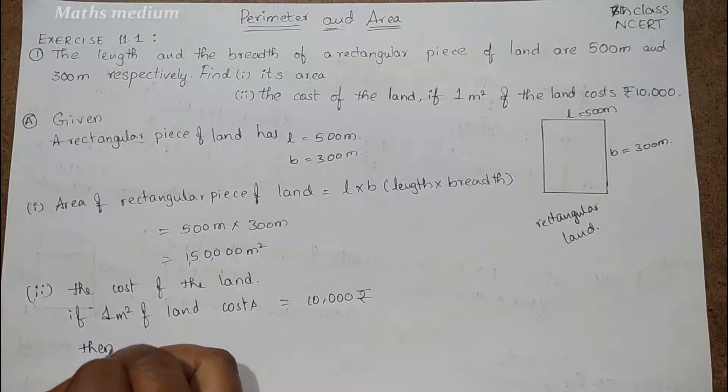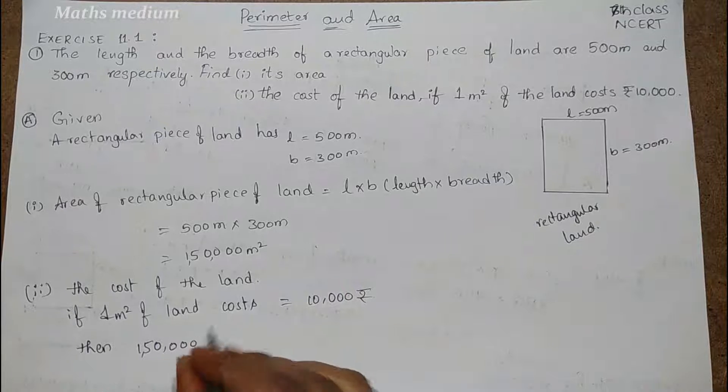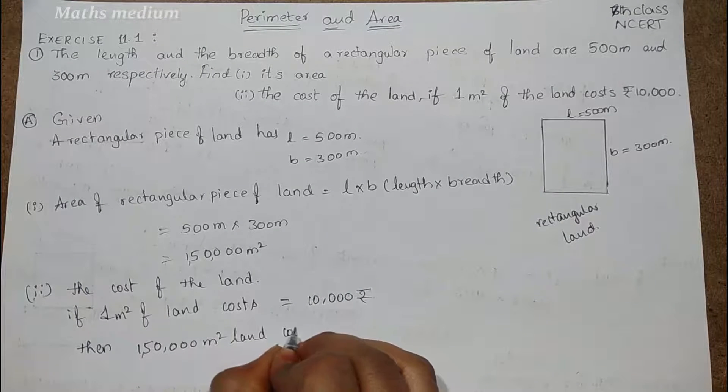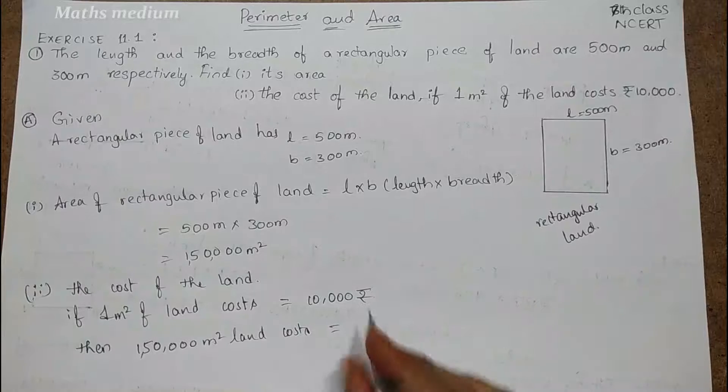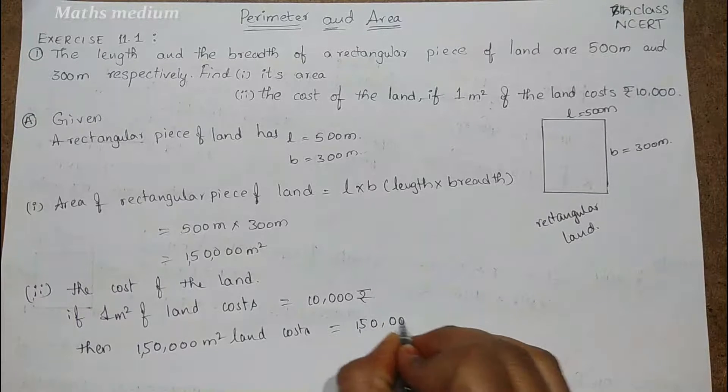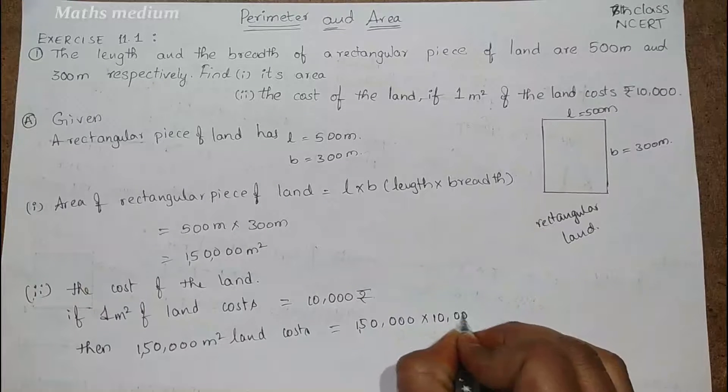then 1,50,000 meter square land cost is equal to 1,50,000 into 10,000 rupees.